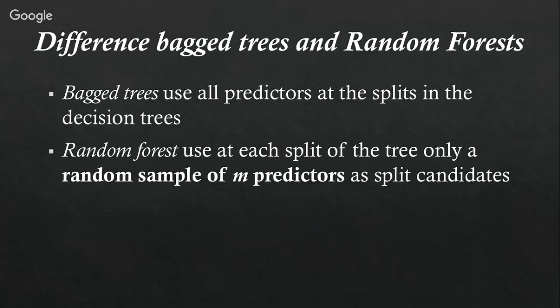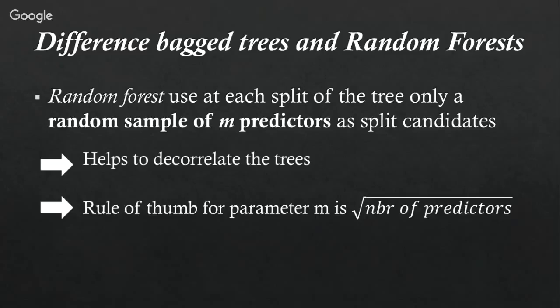Why would you do that? It has a big advantage in that it helps to decorrelate the trees. You can imagine that if there is one dominant predictor in the data, it will always be at the top of the decision tree, making all decision trees look very similar, which has a negative impact on the stability of the model. As a rule of thumb, we can choose the parameter m as the square root of the number of predictors, or you can cross-validate the parameter.